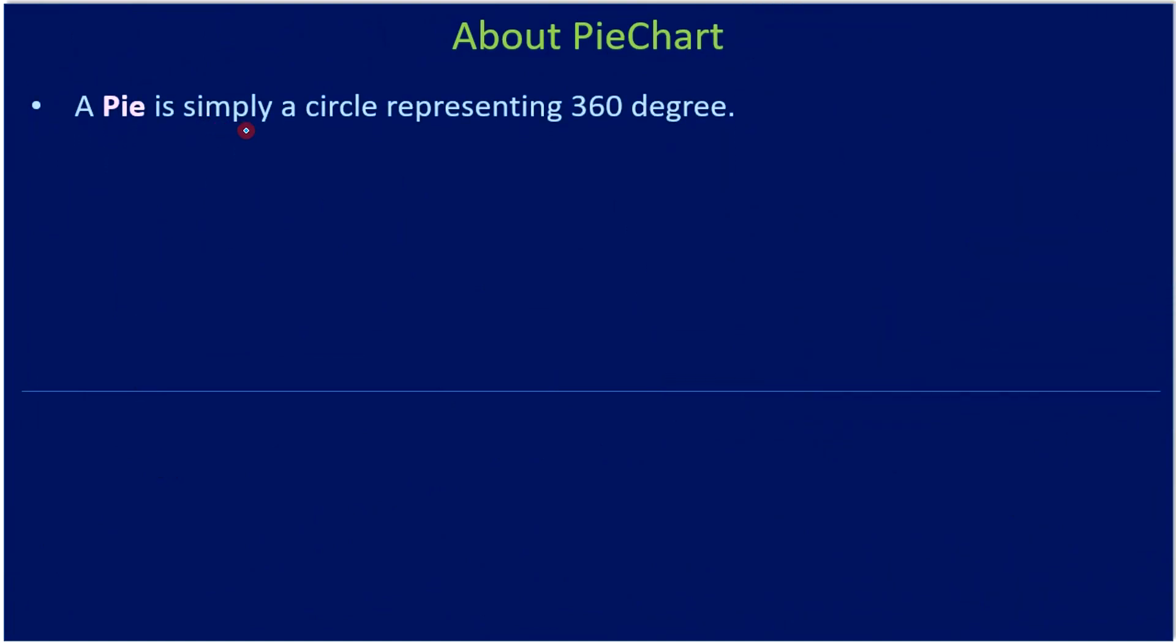The pie is simply a circle representing 360 degrees. So it goes all the way to 360 degrees. A pie is simply a circle representing 360 degrees.